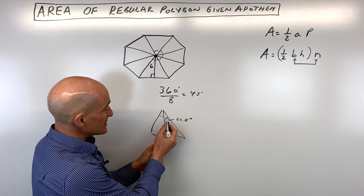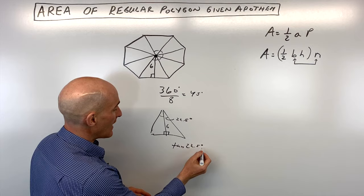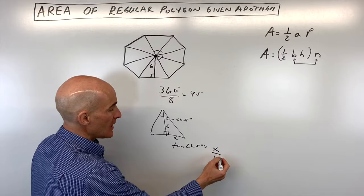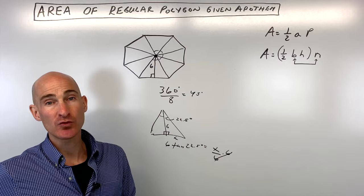And we're going to use our tangent because we have opposite and adjacent. So we're going to say the tangent of 22.5 degrees equals the opposite side over the adjacent side. So x over 6. If we multiply both sides by 6, we get x equals 6 times the tangent of 22.5.